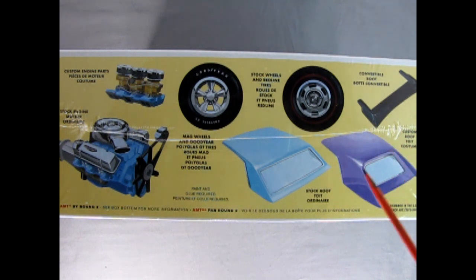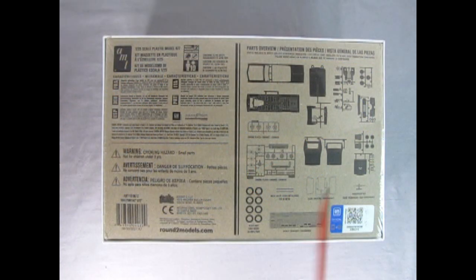Here's our convertible boot if you want the top down, and our stock roof for the top up. And then we also have this really wonderful custom roof with the sunken-in rear window. The bottom of the box shows a wonderful parts breakdown, which is really awesome and a good thing from Round Two.